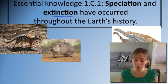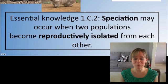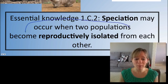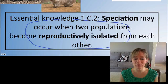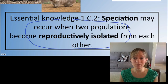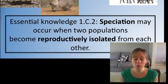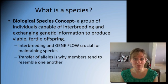First we're going to look at speciation. When does speciation occur? That happens when two populations become reproductively isolated. Speciation happens when two populations can no longer interbreed with one another.